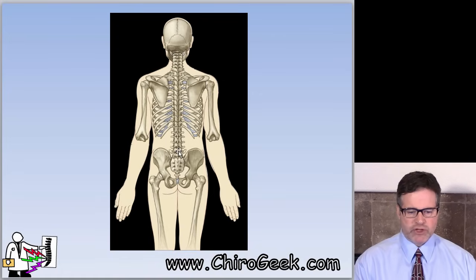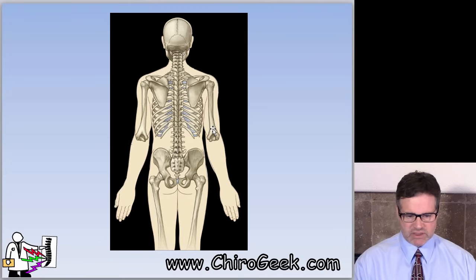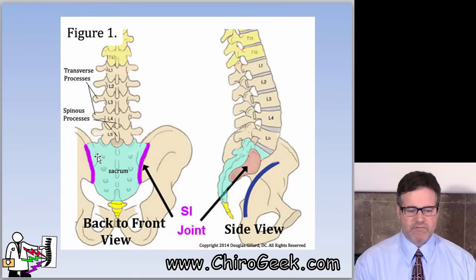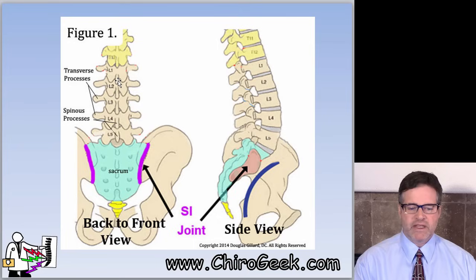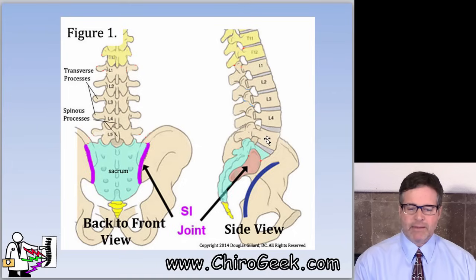This is a posterior-anterior view of the skeleton. The lumbar spine has five lumbar vertebrae stacked on top of a giant triangular-shaped bone called the sacrum. From the side view — which is called the sagittal view — we can see a lordotic curve is formed, and we have the five lumbar vertebrae separated by intervertebral discs.